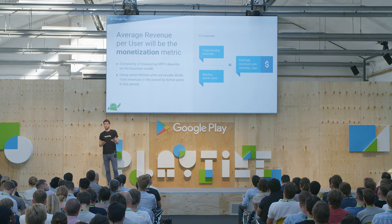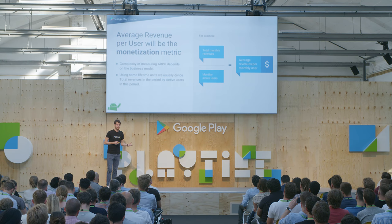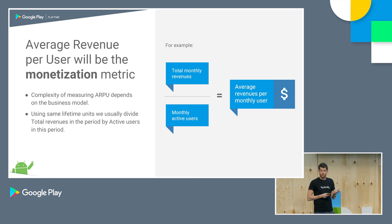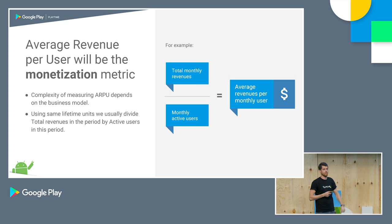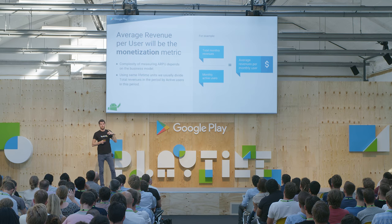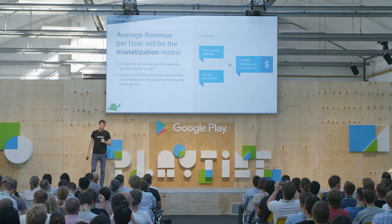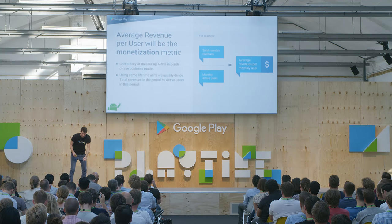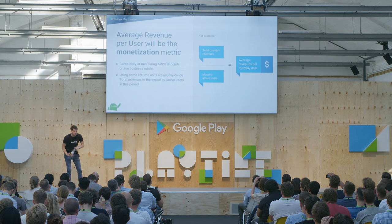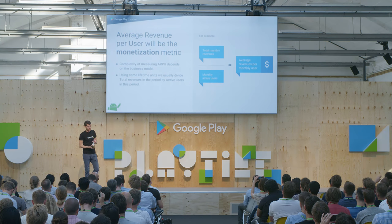Lastly, our monetization metric — average revenue per user (ARPU). That's typically not that difficult to determine: it's usually total monthly revenues divided by monthly active users, giving you the average revenues per month. Make sure you're taking the right units — they should match the units you use in your lifetime calculation.